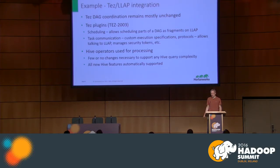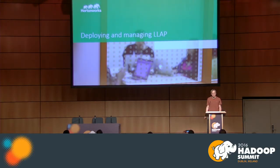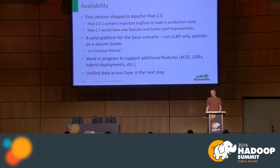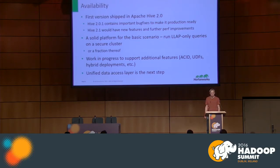Now the current state of the product: the first version shipped with Apache Hive 2.0, but we immediately found bugs that make it hard to use, especially in secure setups. There's going to be a bug fix release, Hive 2.0.1, in a couple of weeks — I'm the release manager — which will make it production-ready. The next Apache Hive version will have new features and improvements, and vendor distributions will hopefully release it in summer, at least in a Hortonworks distribution. Prerequisites include TEZ, Zookeeper for service discovery, and Apache Slider to run long-running services on YARN.